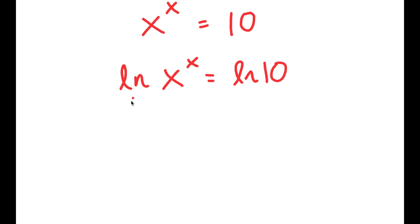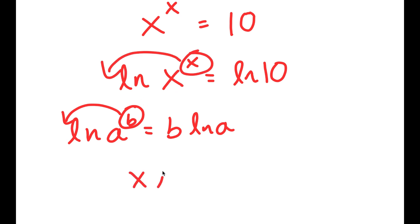And now an important property of logarithms is that if I have something in the form ln a to the power of b, I can move b to the front. So this turns into b times ln a. So ln x to the power of x, I can move x to the front, giving x times ln x is equal to ln 10.